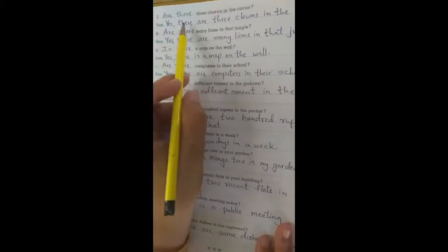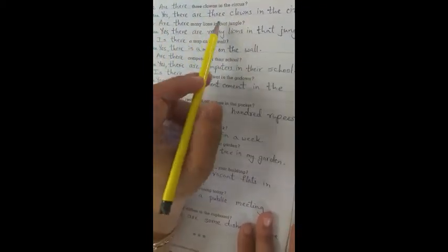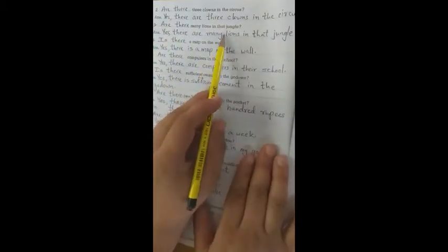Put is there or are there correctly in the question and answer the questions in affirmative. Number 1: Is there grass in the garden? Yes, there is grass in the garden. Are there three clowns in the circus? Yes, there are three clowns in the circus.